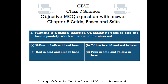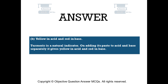The right answer is Option B: yellow in acid and red in base. Turmeric is a natural indicator. On adding its paste to acid and base separately, it gives yellow in acid and red in base.